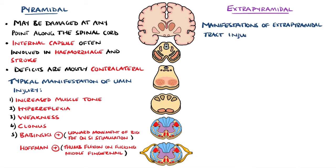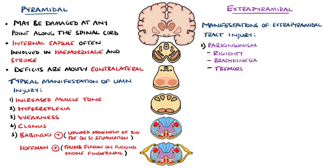Damage to the extrapyramidal tracts can often result in Parkinsonism, featuring rigidity, bradykinesia, tremors, and postural deficits. Others include chorea, athetosis, and dystonia.